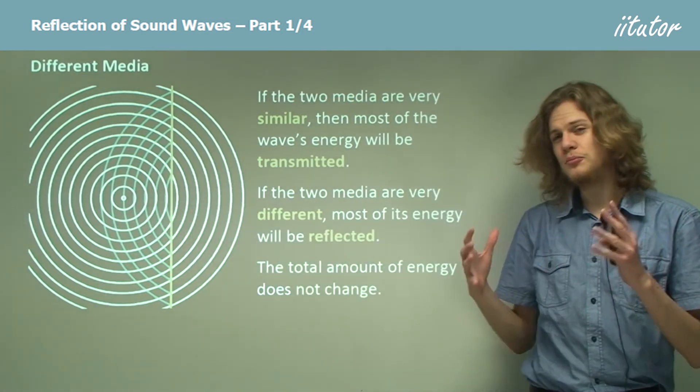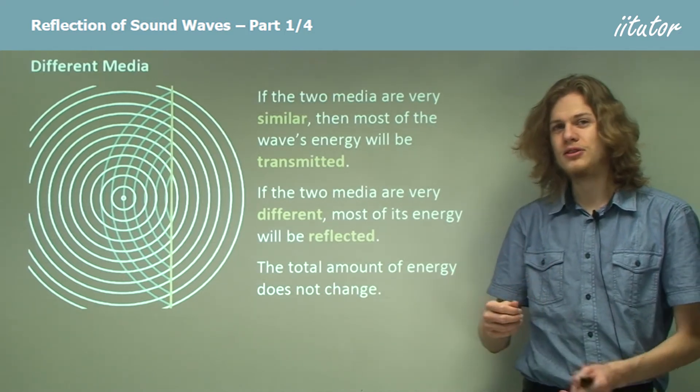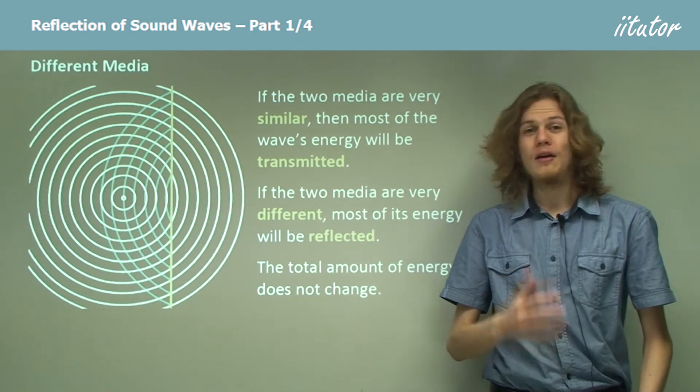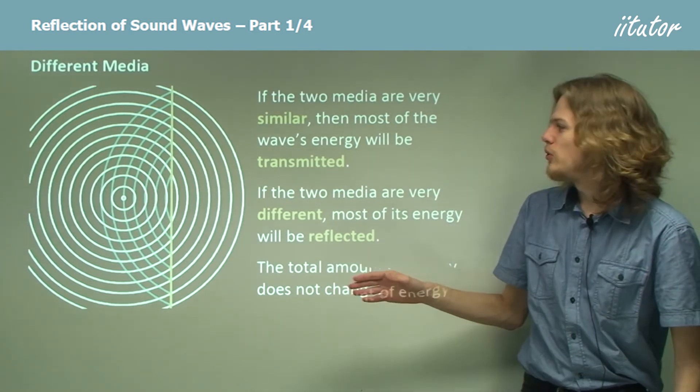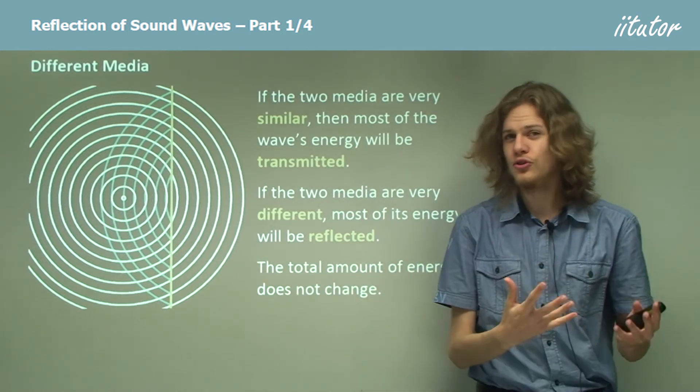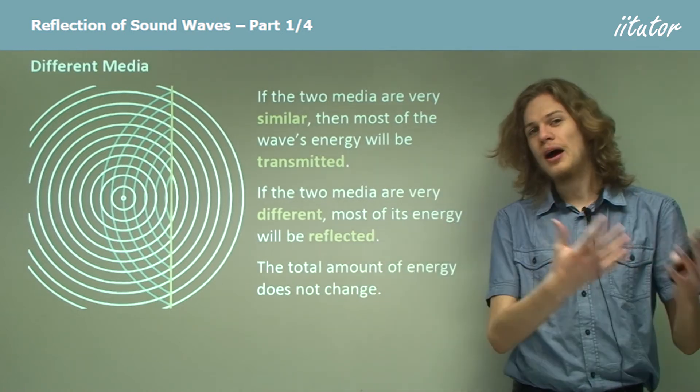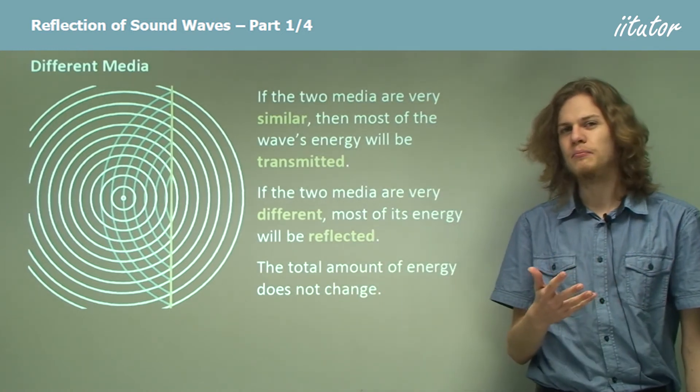So that means that we have three types of waves. We have the incident wave, which is the starting wave that's incident to some sort of barrier. We have the transmitted wave, which goes through the barrier and gets transmitted through the new medium. And we have the reflected wave, which gets bounced back into the same medium from which the incident wave came.